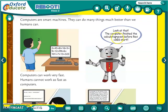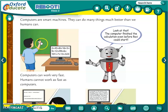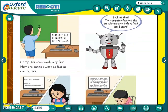Look at that — the computer finished the calculation even before Ravi could start. Here you can see so many numbers and the computer can do calculations very fast. Even before Ravi had completed — or even started — the computer had already given the answer. So it means the computer can work very fast; humans cannot work as fast as a computer.